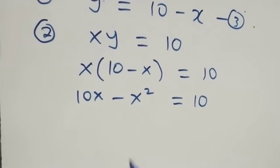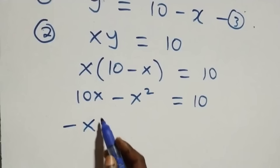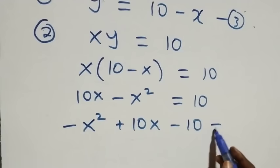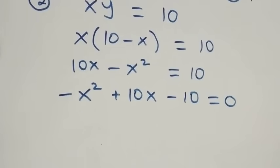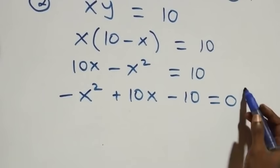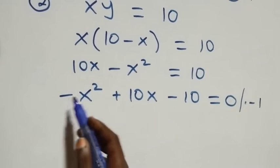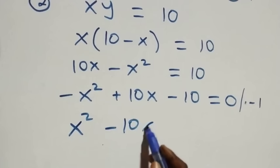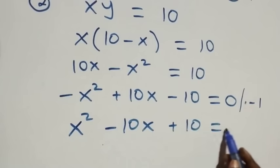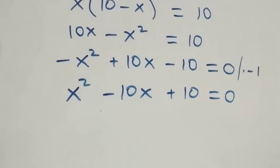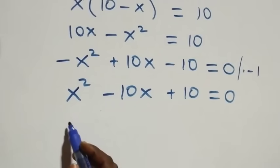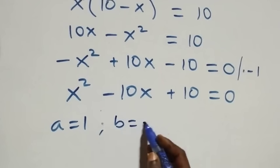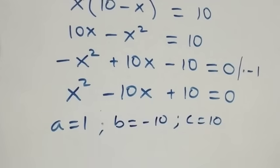When we rearrange, we have minus x squared plus 10x, then taking 10 to this side gives minus 10, equals 0. Here we have a quadratic equation where a equals 1, b equals minus 10, and c equals 10. We apply the quadratic formula.